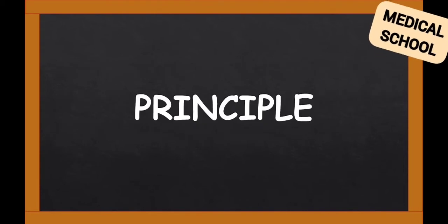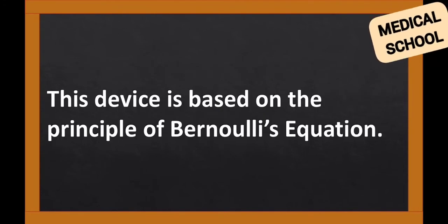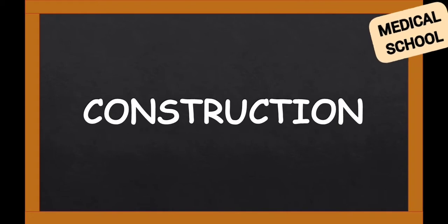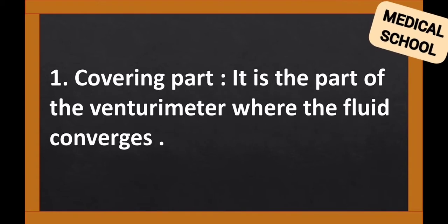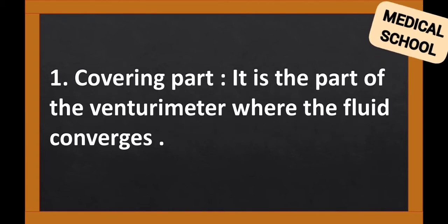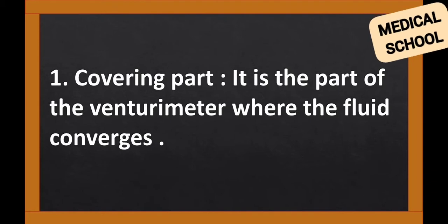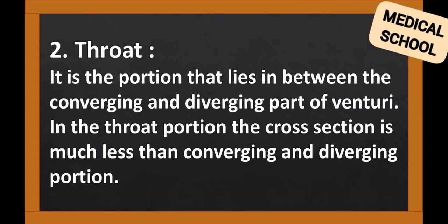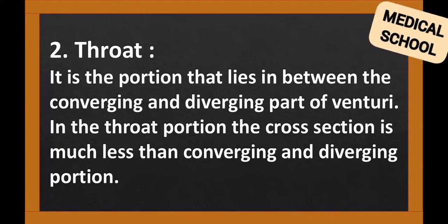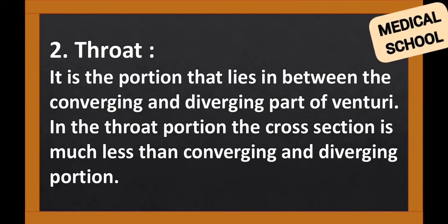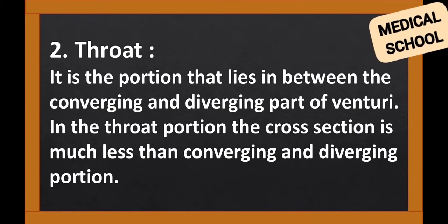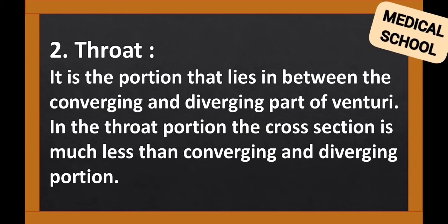Principle: This device is based on the principle of Bernoulli's equation. Construction: The converging part is the part of the Venturi Meter where the fluid converges. The throat is the portion that lies in between the converging and diverging part of the Venturi. In the throat portion, the cross-section is much less than the converging and diverging portion.